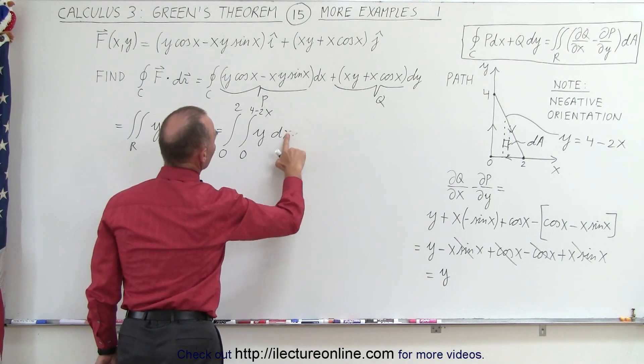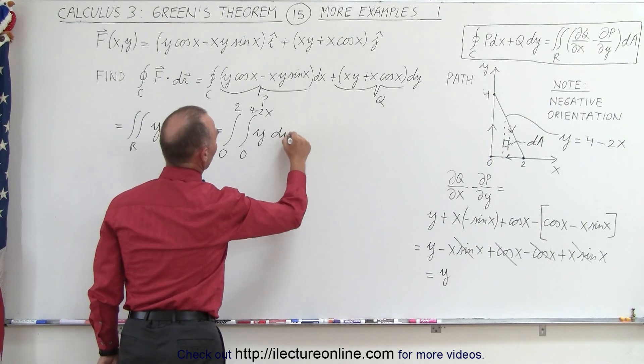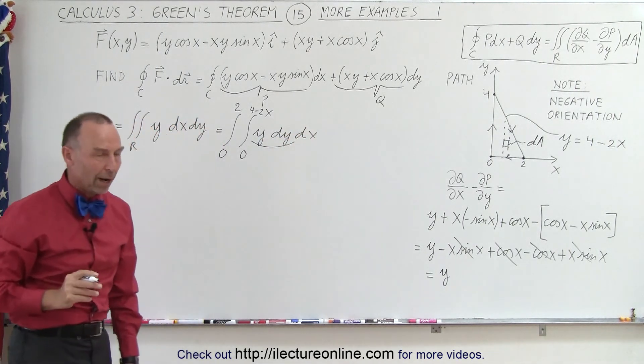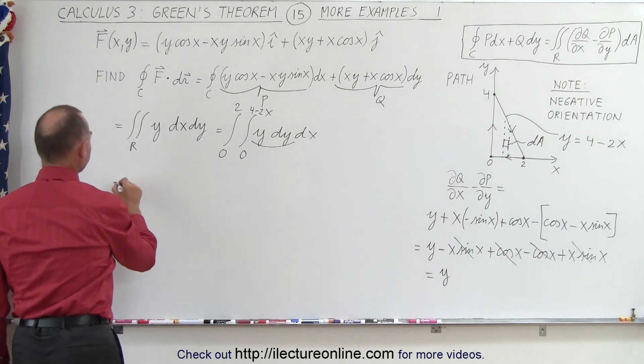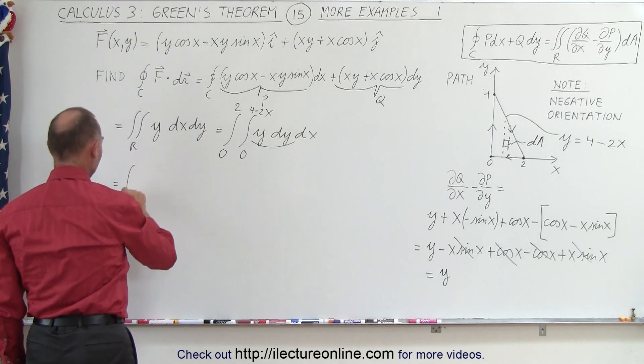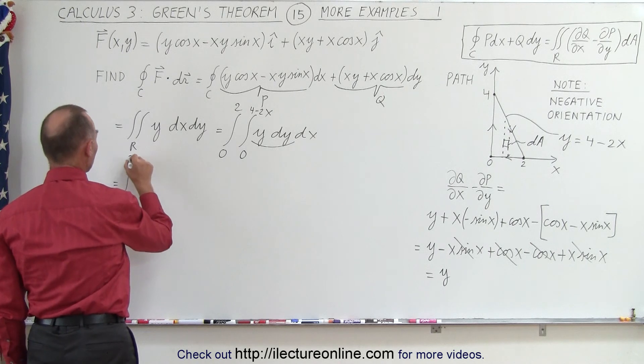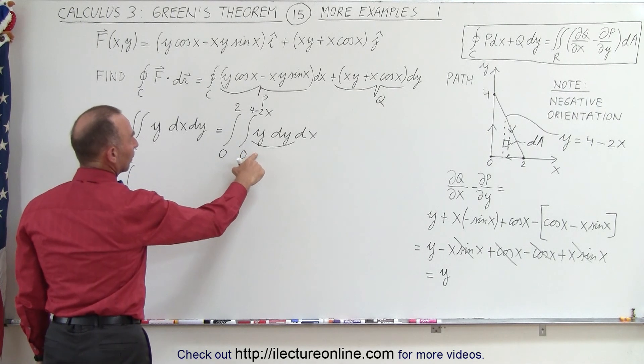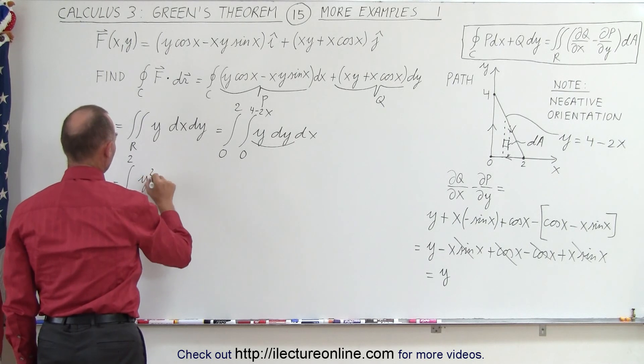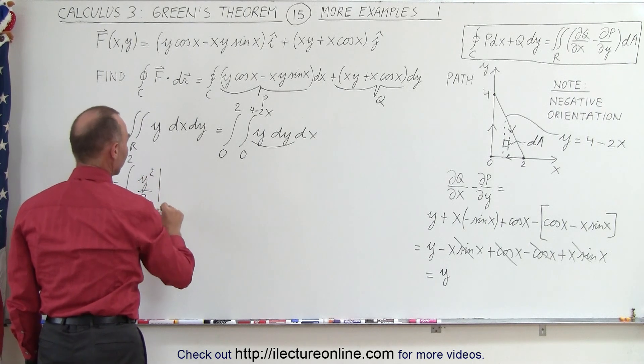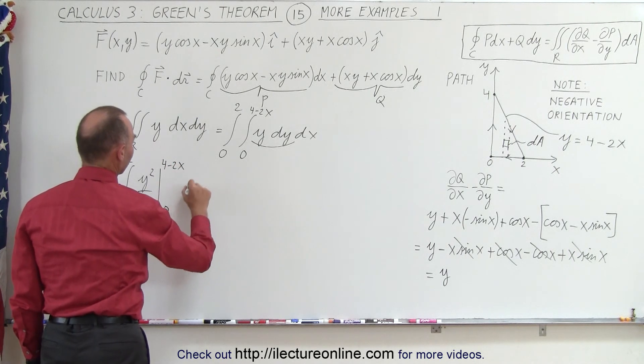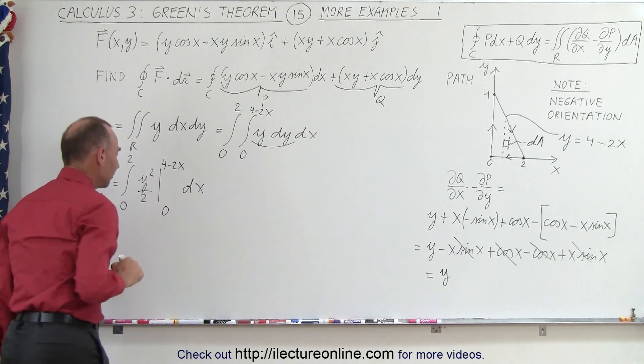So this can now be written as the double integral, first over in the Y direction from 0 to Y equals 4 minus 2X. And in the X direction, from X equals 0 to the furthest point on the right, which is 2. And that gives us Y DX DY. And maybe what I'll do here is I'll interchange these, DY and DX first, because we're first going to integrate Y DY. So that becomes equal to, well, we still have our first integral from 0 to 2. And then here what we end up with is Y squared over 2 evaluated from 0 to 4 minus 2X. And then we still have a DX for our second integral.